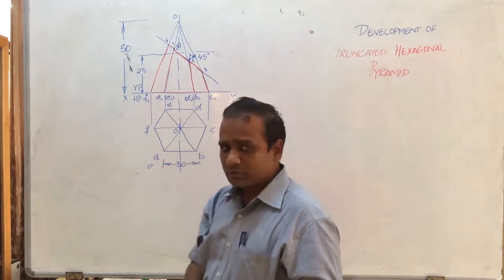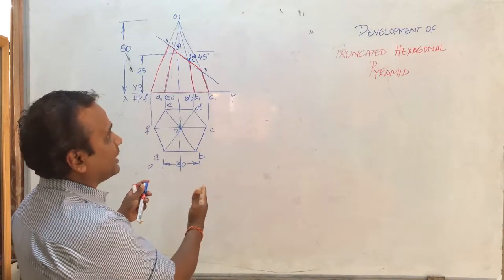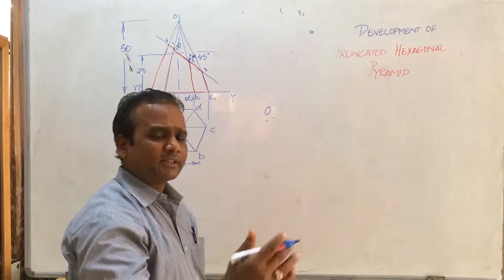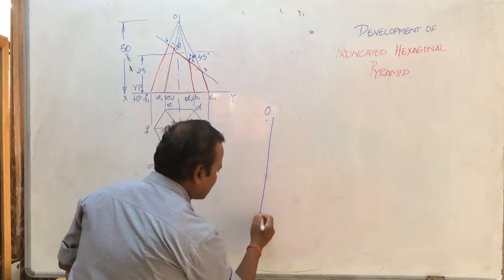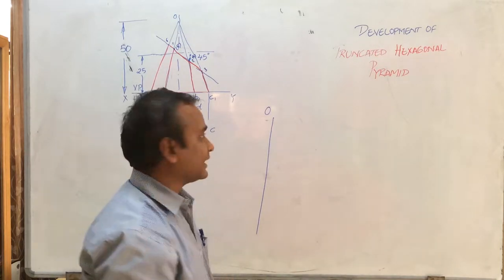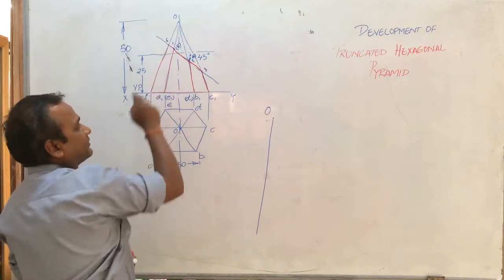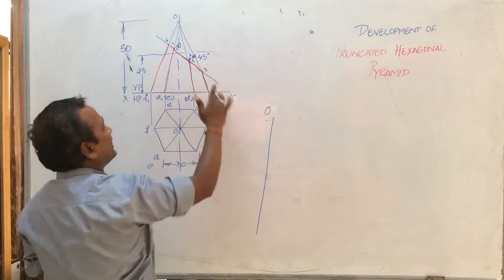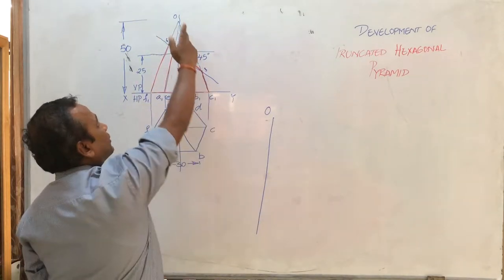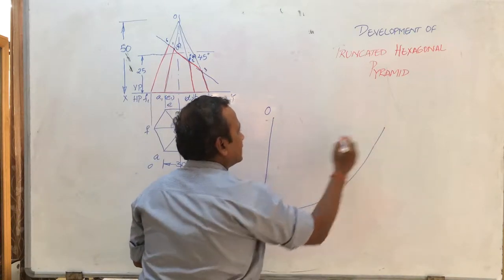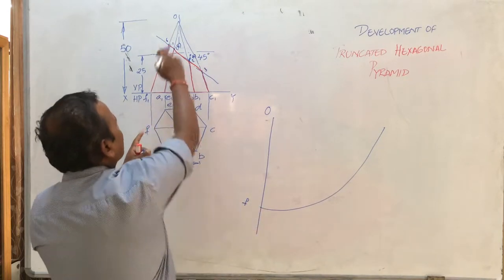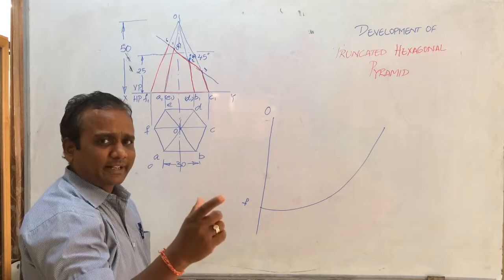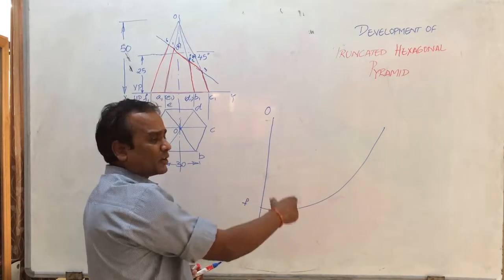Now let me show you how to develop this truncated hexagonal pyramid on a sheet. Mark a point O on the sheet and draw a line to some length. Take a compass and measure the distance from O to F — the extreme edge. Using that distance, draw an arc from point O. This distance represents the slant edge O-F.